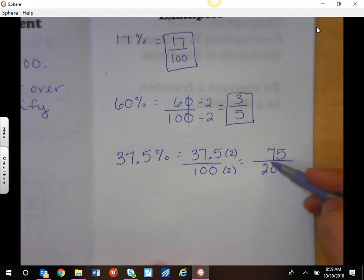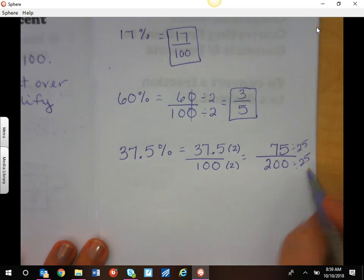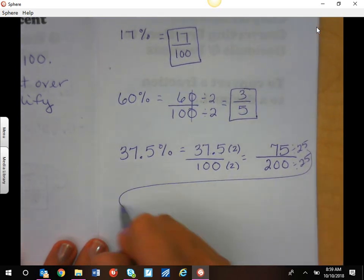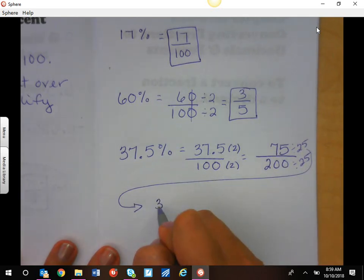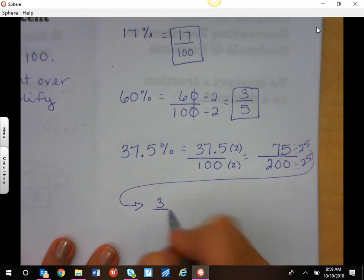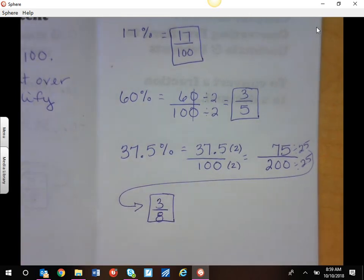And now this is a whole lot easier to simplify because we don't have a decimal. Again, think of quarters. I can take and divide both of these by 25 to simplify it. And when I do that, I have three quarters in 75 cents and I have eight quarters in two dollars. So 37.5 percent is equivalent to three-eighths.